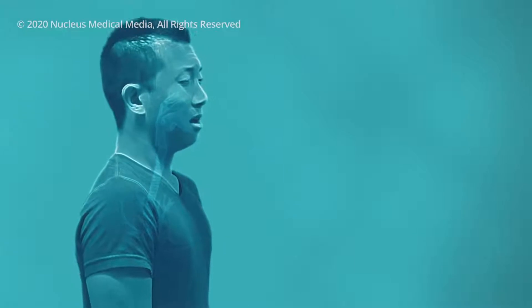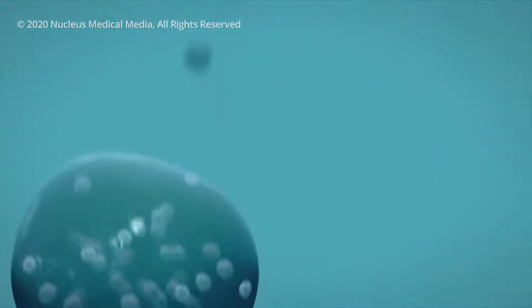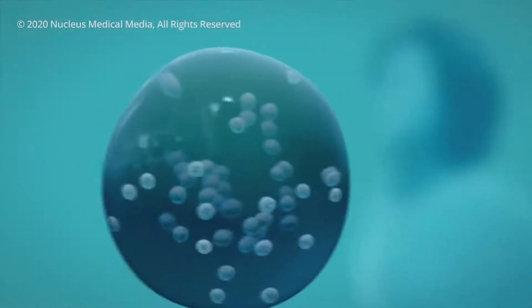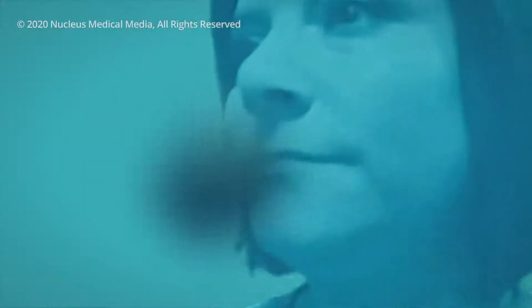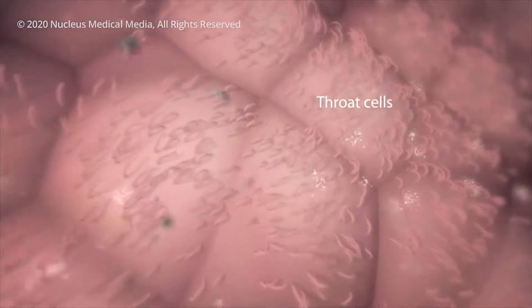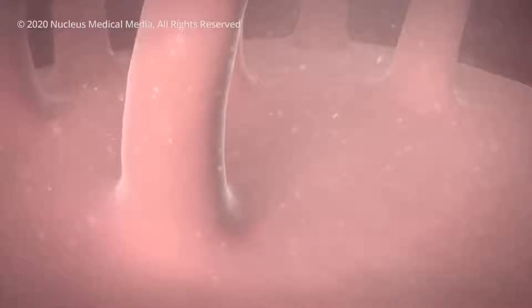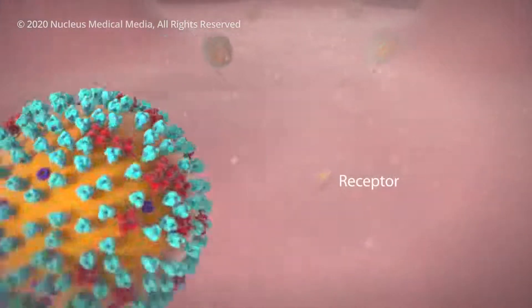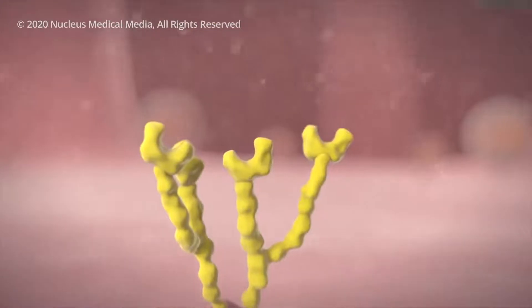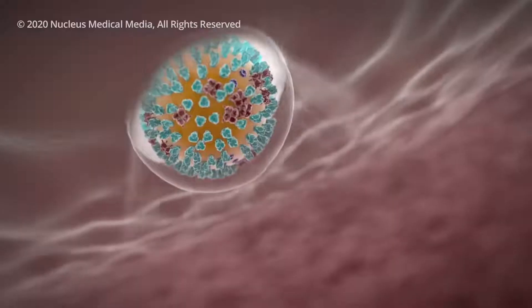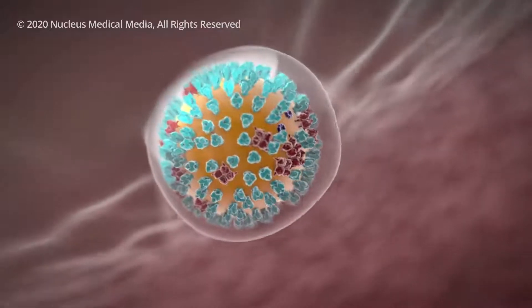When an infected person talks, coughs, or sneezes, droplets carrying the virus may land in your mouth or nose and then move into your lungs. Once inside your body, the virus comes in contact with cells in your throat, nose, or lungs. One spike on the virus inserts into a receptor molecule on your healthy cell membrane like a key in a lock. This action allows the virus to get inside your cell.